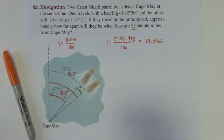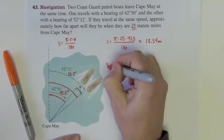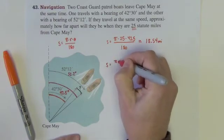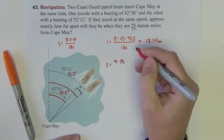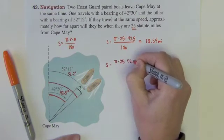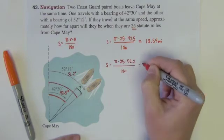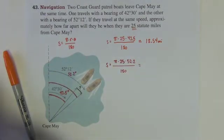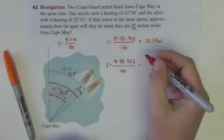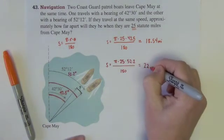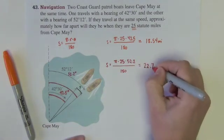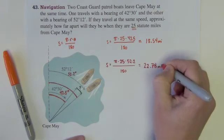I'm going to do the same thing for the other boat. It's pi times 25 is its radius times 52.2 divided by 180. Again, I'm just going to dump this into the calculator. And I get 22.78 miles.